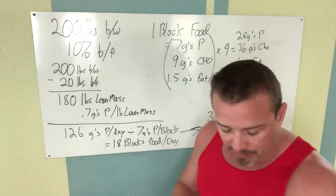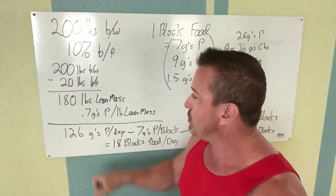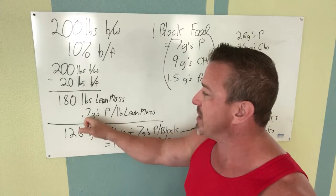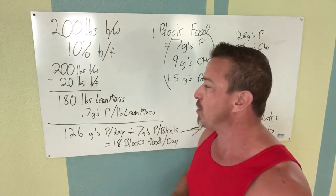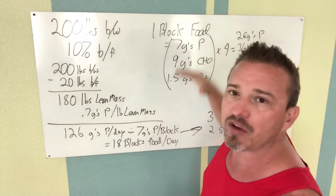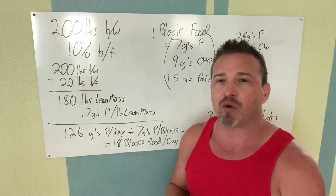Now if you're a hard gainer, somebody who's trying to gain some size and strength, you would want to take this up. Instead of it being 0.7, use 1.2 times whatever your grams of protein, and that would equal out on the grams of fat and grams of carbohydrates.